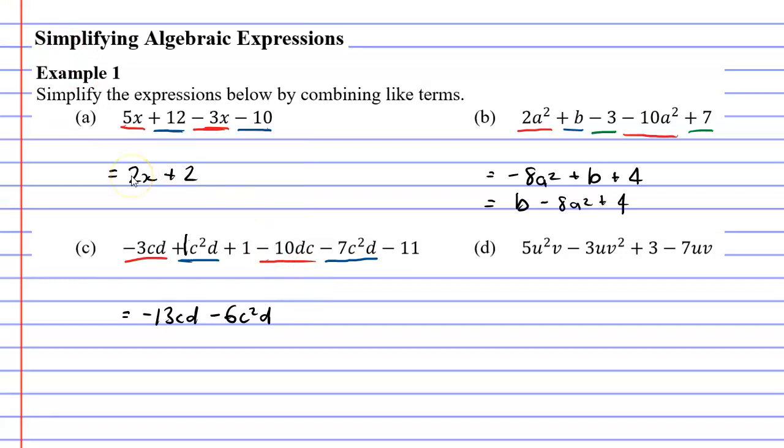And now we have a couple of constants. We've got positive 1, negative 11. 1 minus 11 is negative 10. So at the end of my algebraic expression, I'm going to write minus 10. And that's my simplified expression for question c.